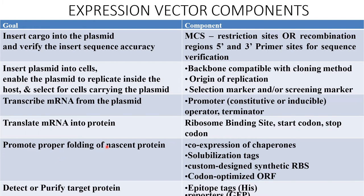Promoting proper folding of the nascent protein is done by co-expression of chaperones. A stabilization tag like a histidine tag, a custom-designed synthetic RBS, or a codon-optimized open reading frame may be utilized. To detect or purify the target protein, an epitope tag such as a histidine tag is utilized.